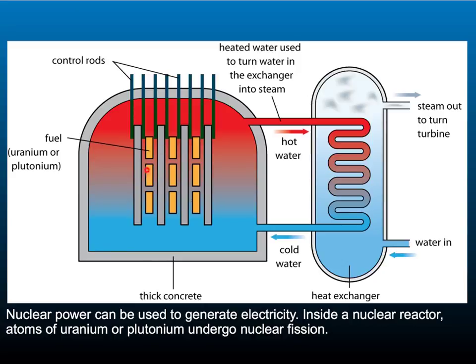When the material undergoes fission, it releases a lot of energy. This then goes through the heat exchanger where it turns water into steam. The steam is then released to turn a turbine, which turns a generator, which generates electricity.